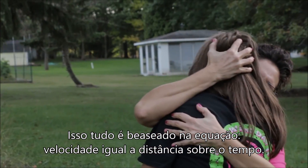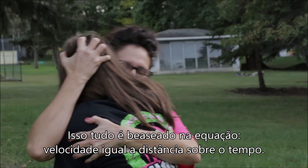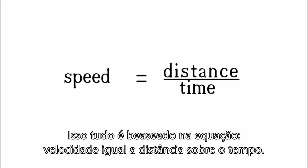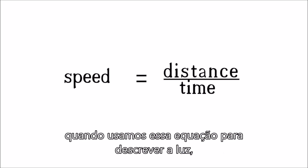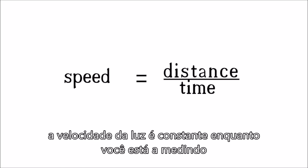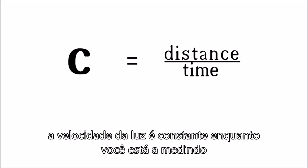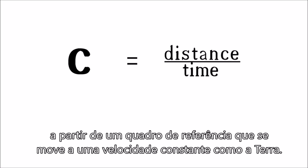It's all based on the equation speed equals distance over time. When we use this equation to describe light, the speed of light is constant as long as you are measuring it from a reference frame moving at a constant velocity, such as earth.